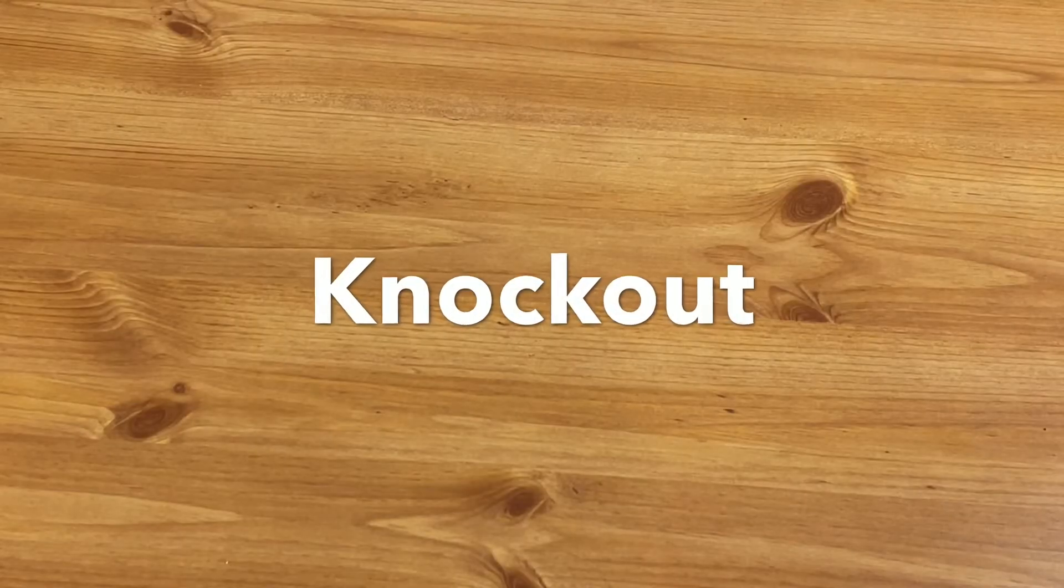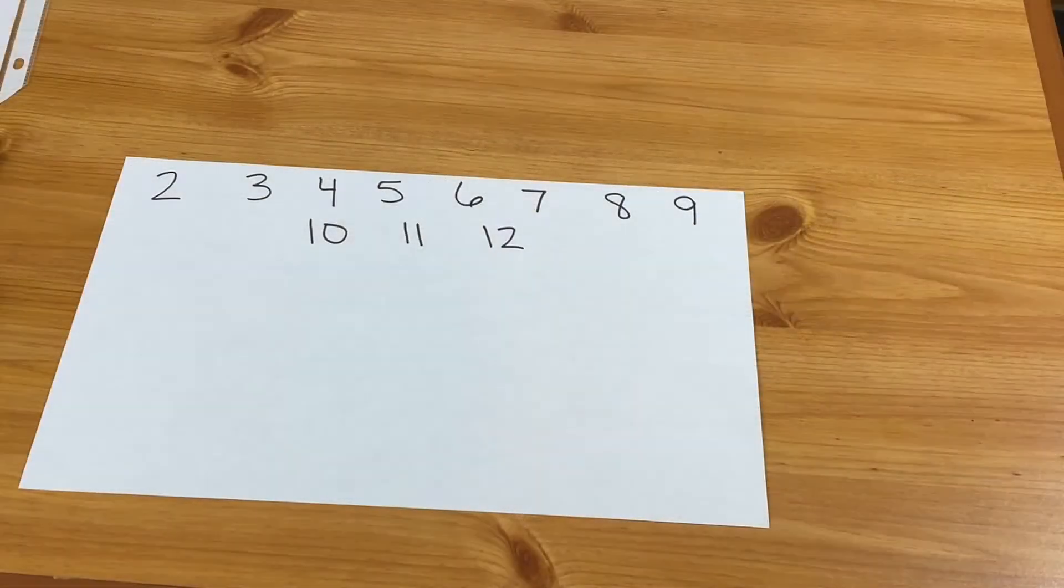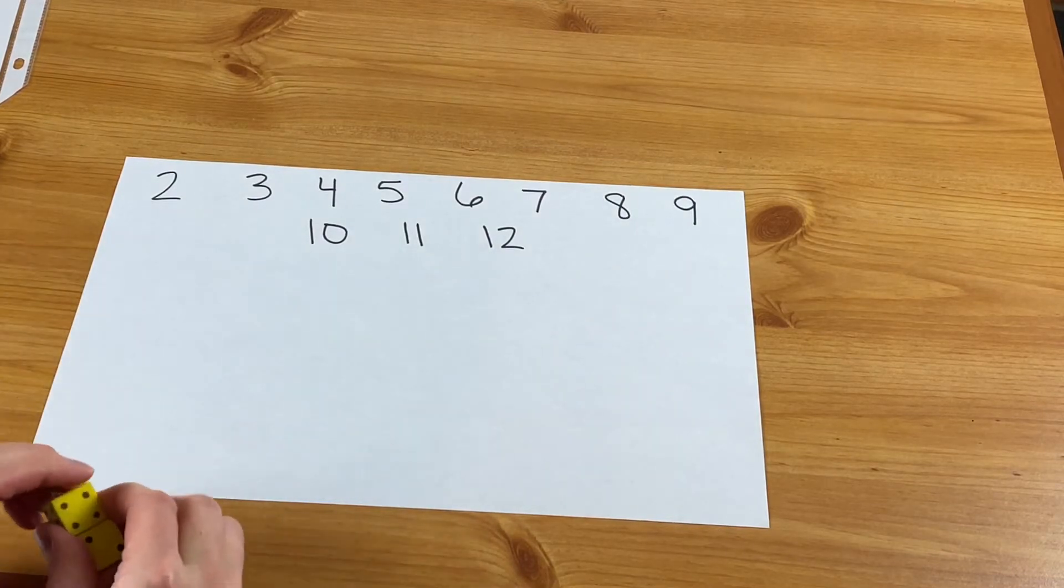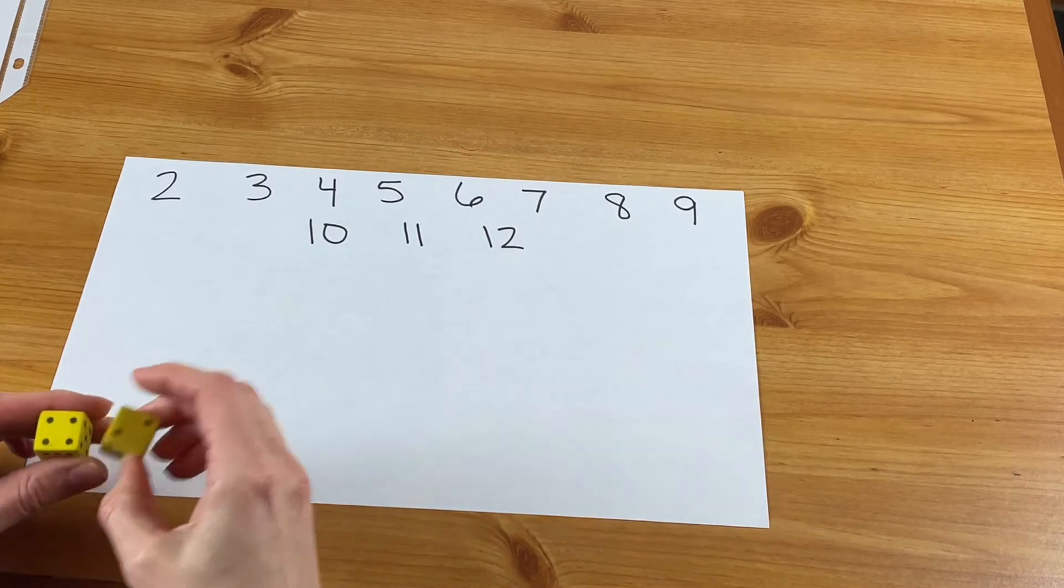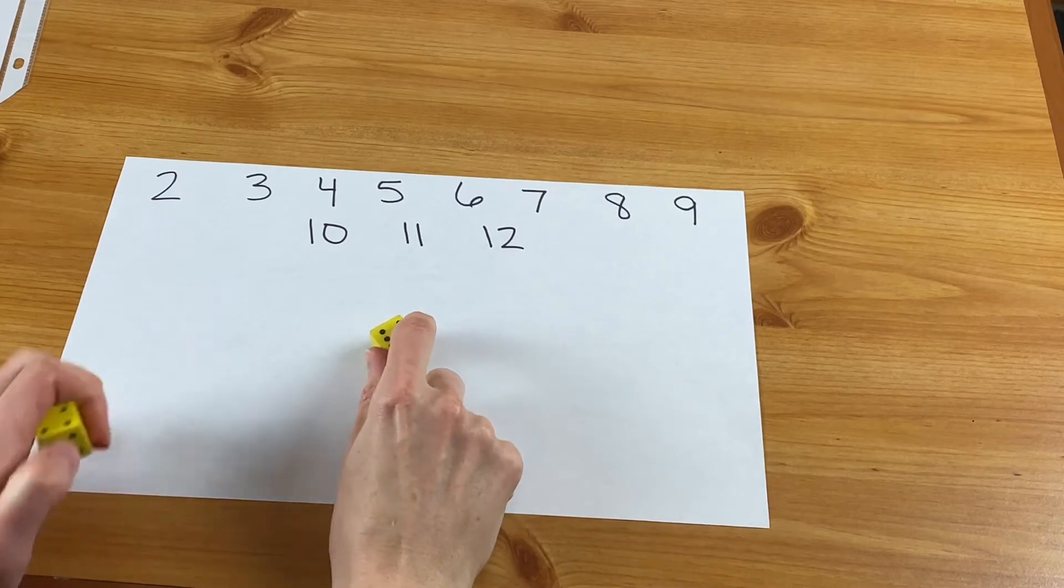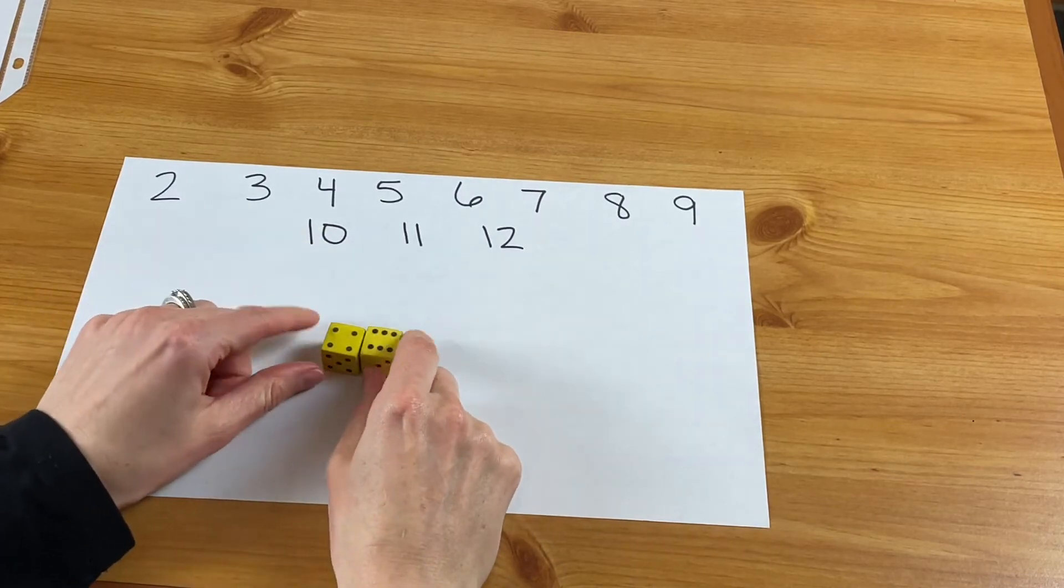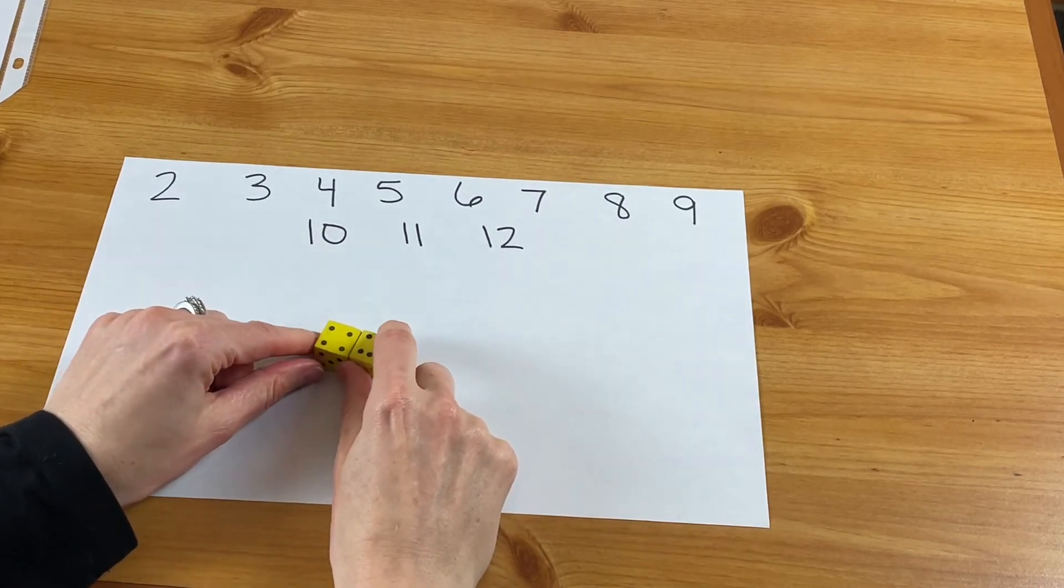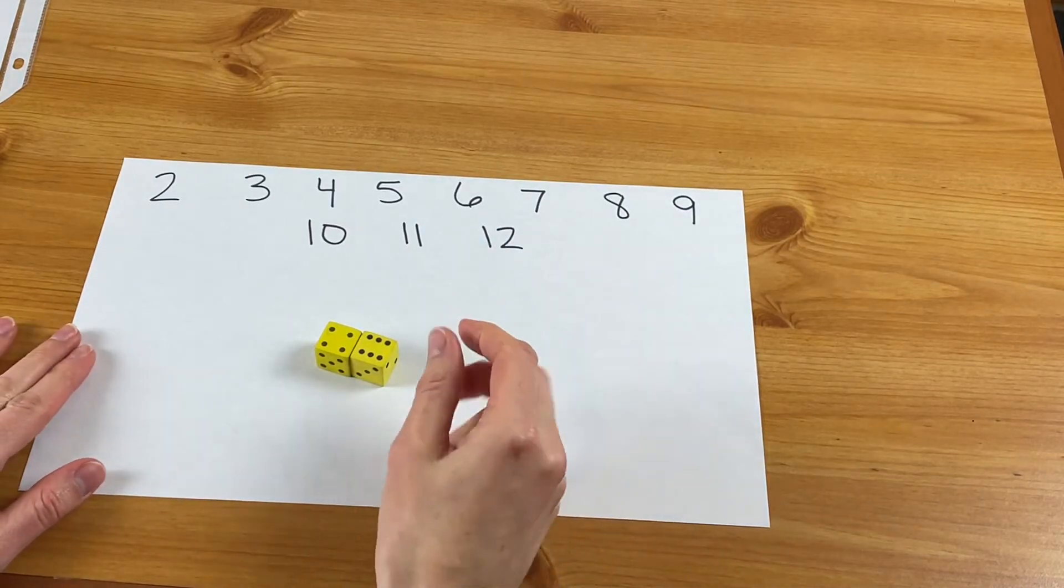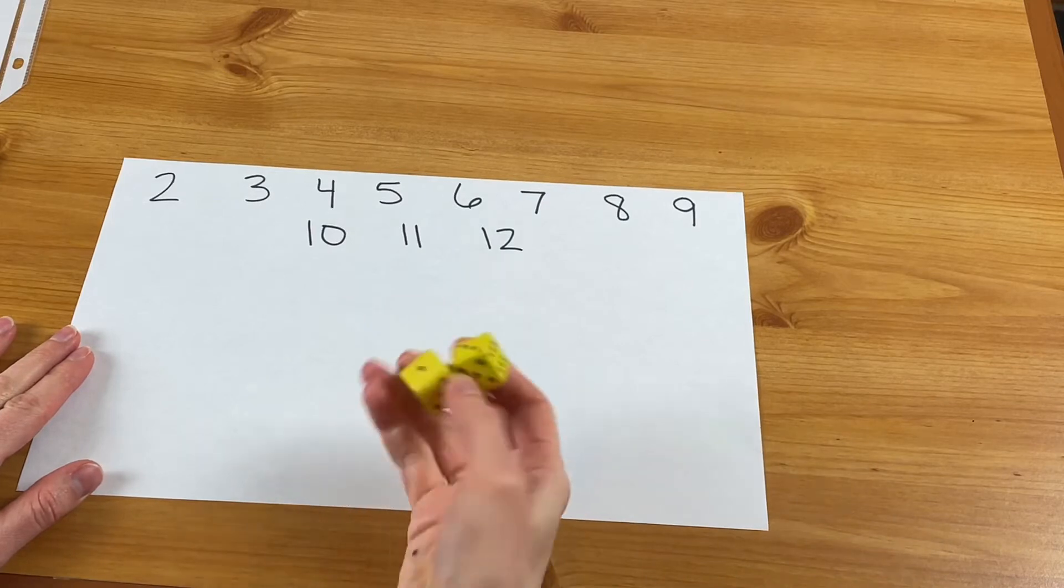This game is Knockout. If you watched part one it should look familiar. I just wanted to show you with two or more dice. So we did it with one and we had numbers one through six. For two dice you'll have numbers two through twelve, and it's pretty much played the same way. You can even go to three dice as well if you want to do even more of a challenge.